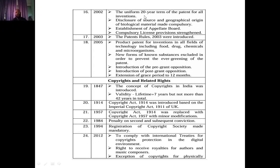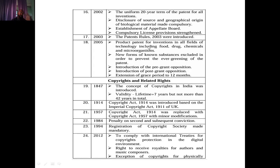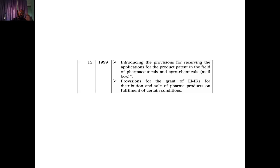In 2002, a uniform 20-year term of patent protection for all inventions was granted, and disclosure of the source and geographical origin of biological materials was made compulsory. An appellate board was established and compulsory license provisions were standardized. Patent Rules 2003 were introduced. In 2005, product patents for inventions in all fields of technology including food, drugs, chemicals, and microorganisms were introduced. New forms of known substances were excluded to prevent evergreening of patents, and pre-grant and post-grant opposition provisions were introduced.